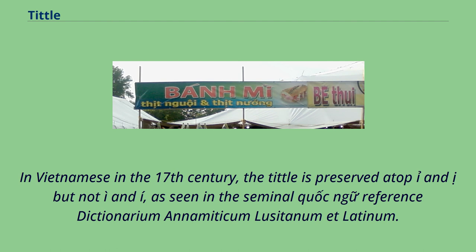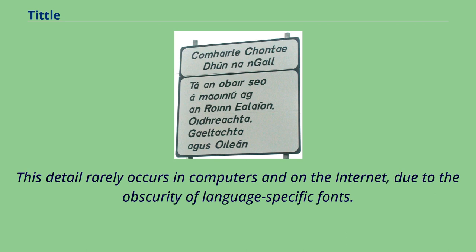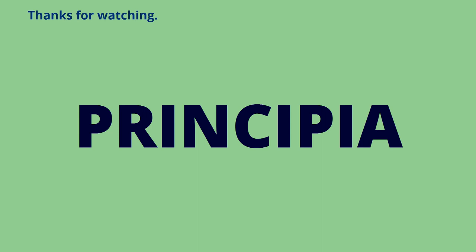In Vietnamese, in the 17th century the tittle is preserved atop i and í but not ì and ê, as seen in the seminal reference Dictionarium Annamiticum Lusitanum et Latinum. In modern Vietnamese, a tittle can be seen in ì, í, and ê in cursive handwriting and some signage. This detail rarely occurs on computers and on the internet due to the obscurity of language-specific fonts. In any case, the tittle is always retained in i.